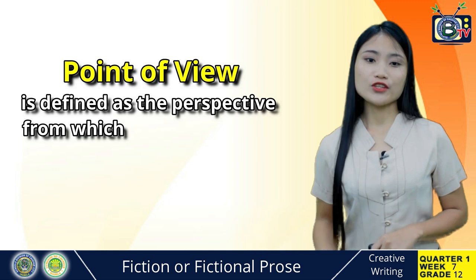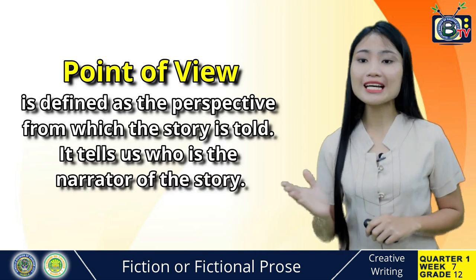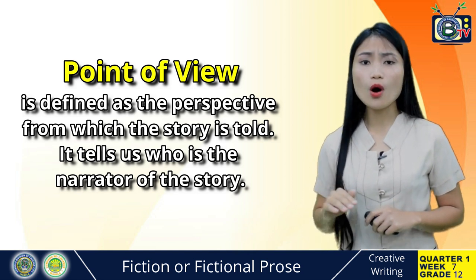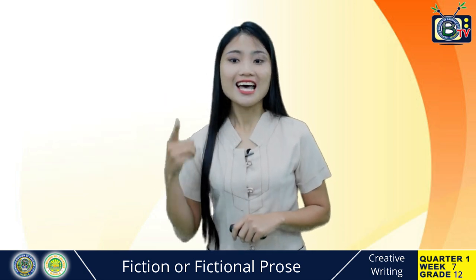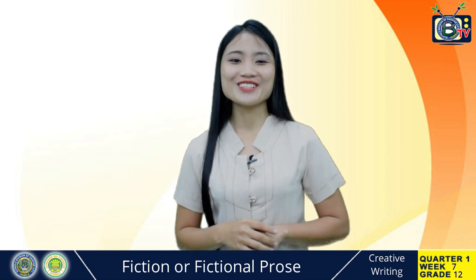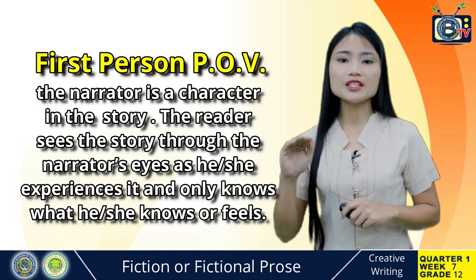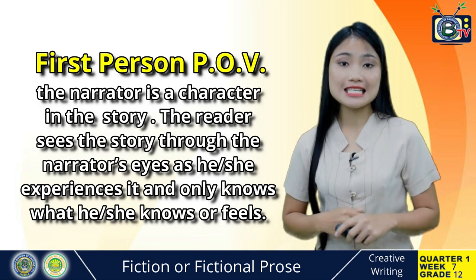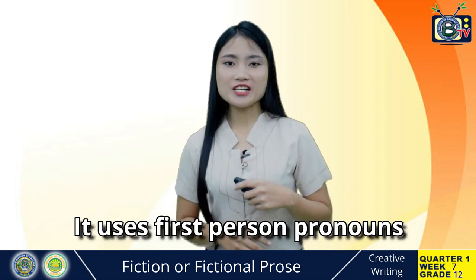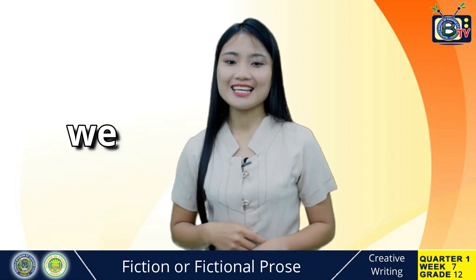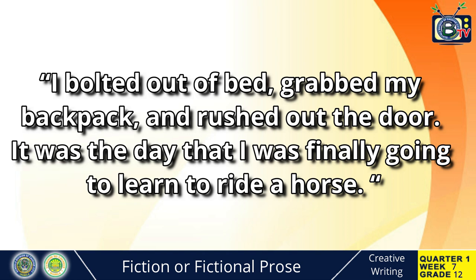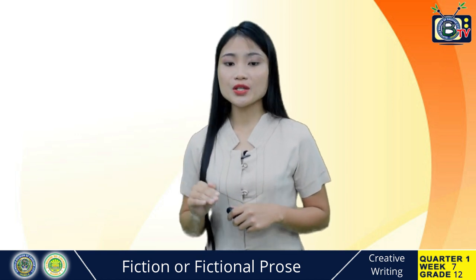The fifth element of fiction is point of view, or POV, defined as the perspective from which the story is told — it tells us who is the narrator of the story. There are three main types of point of view: the first, second, and third person. In the first person point of view, the narrator is a character in the story; the reader sees the story through the narrator's eyes as he or she experiences it, and only knows what he or she knows or feels. It uses first person pronouns like I, me, and we. For example: 'I bolted out of bed, grabbed my backpack, and rushed out the door. It was the day I was finally going to learn to ride a horse.' First person narrators can only tell us the parts of a story that they experience or know about — if something happens that the narrator does not know about, the readers won't know about it either.